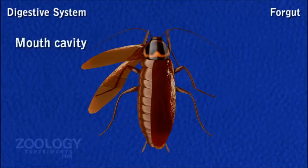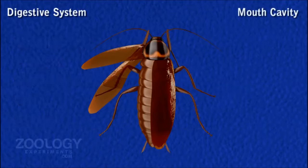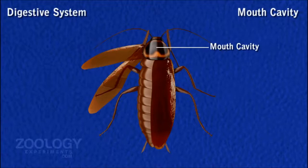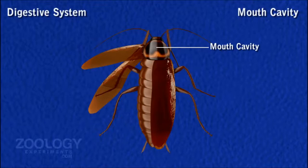Foregut. It includes mouth cavity, pharynx, esophagus, crop, and gizzard. Mouth cavity is a small, indefinable space outside the mouth, which is surrounded by mouth parts. Hypopharynx divides the pre-oral cavity into a posterior part called salivarium, into which the common salivary duct opens, and an anterior part which leads towards the mouth as a narrow food passage. Food is crushed and acted upon by salivary secretion in the mouth cavity.